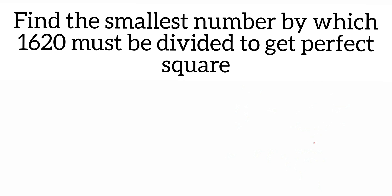Hey everyone, here's your question from square and square root: Find the smallest number by which 1620 must be divided to get a perfect square. This number is not a perfect square; we have to make it a perfect square.